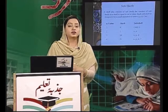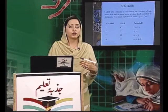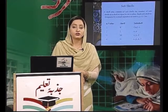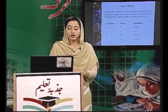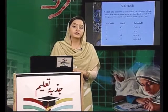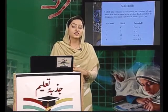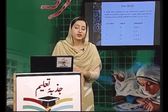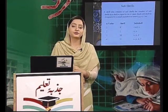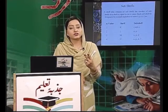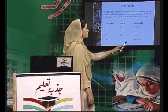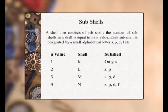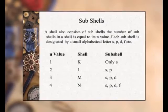अब बात करते हैं कि हर shell के अंदर further divisions हैं। जिस तरह एक floor के अंदर different rooms होते हैं, इसी तरीके से जो shells हैं उनके अंदर further compartmentalization हुई है। K shell जिसके अंदर सिर्फ दो electron आ सकते हैं, उसके अंदर एक ही sub-shell है जिसका नाम है S। दूसरे shell L के अंदर दो sub-shells हैं: S और P। तीसरे shell M के अंदर तीन sub-shells पाए जाते हैं। चौथे shell N के अंदर चार sub-shells S, P, D, F पाए जाते हैं। इन sub-shells के अंदर electrons आकर arrange होते हैं।